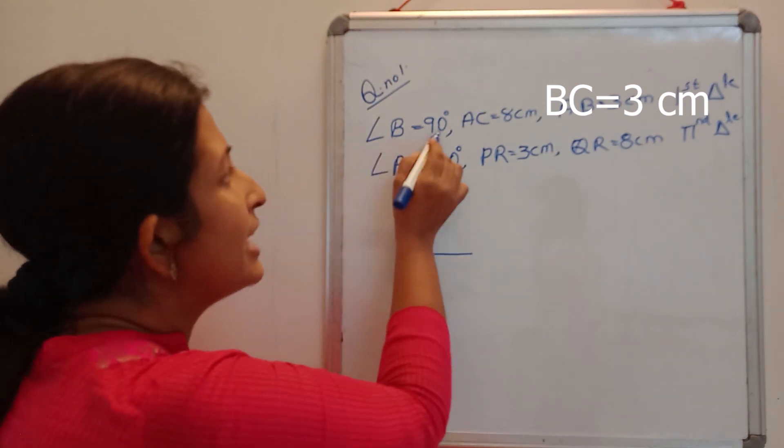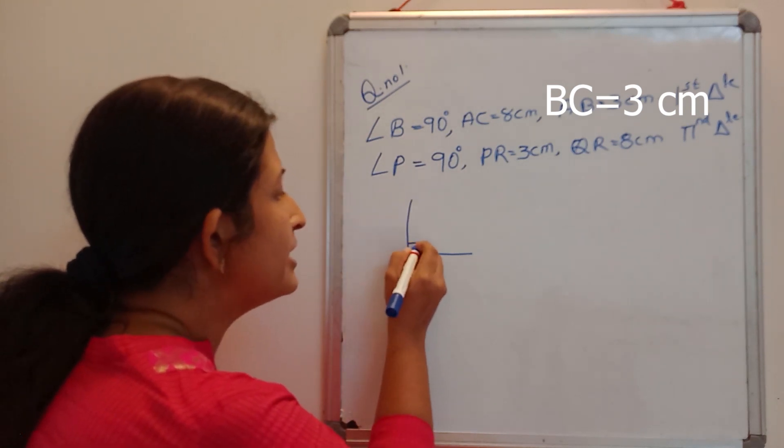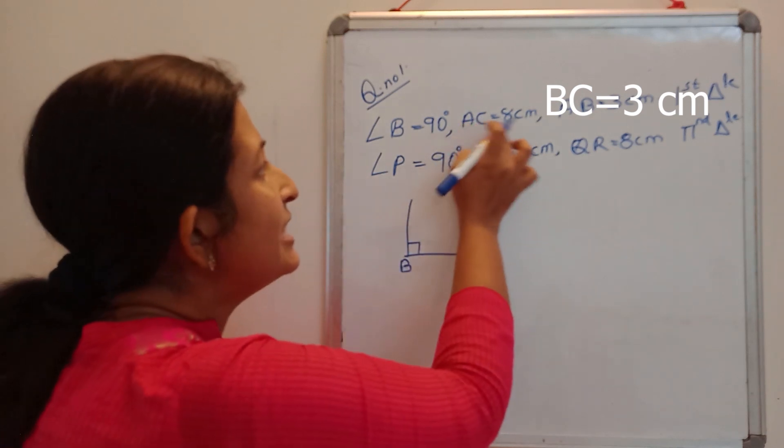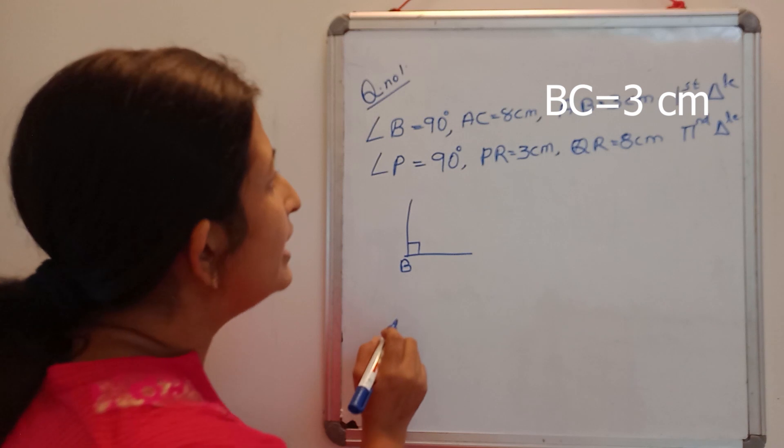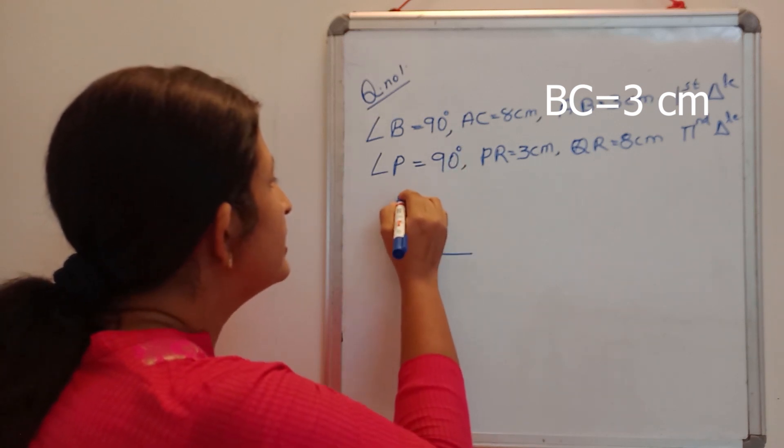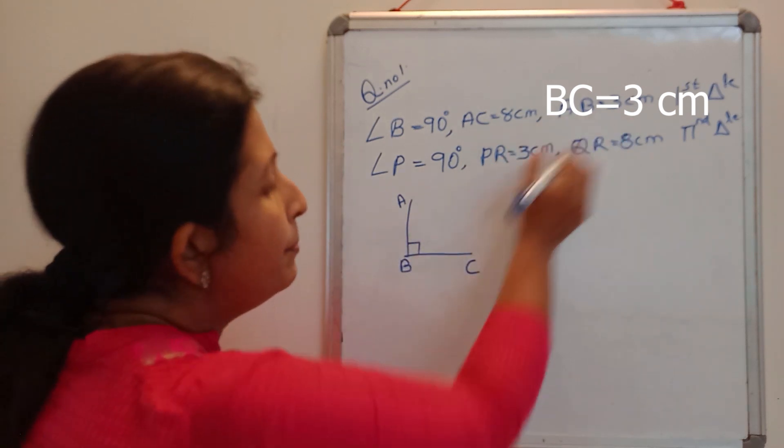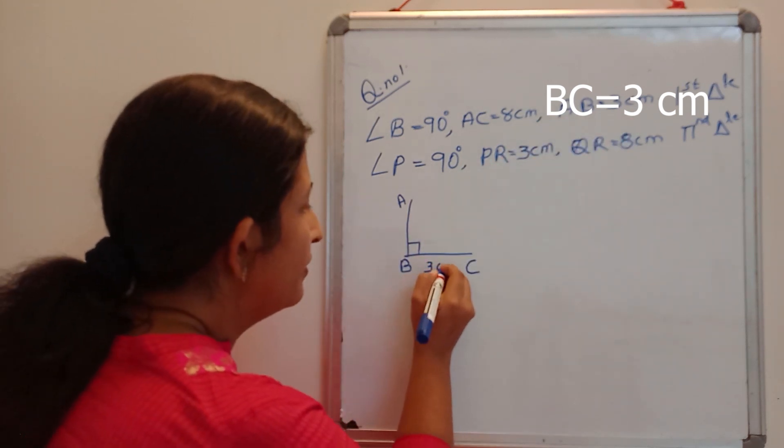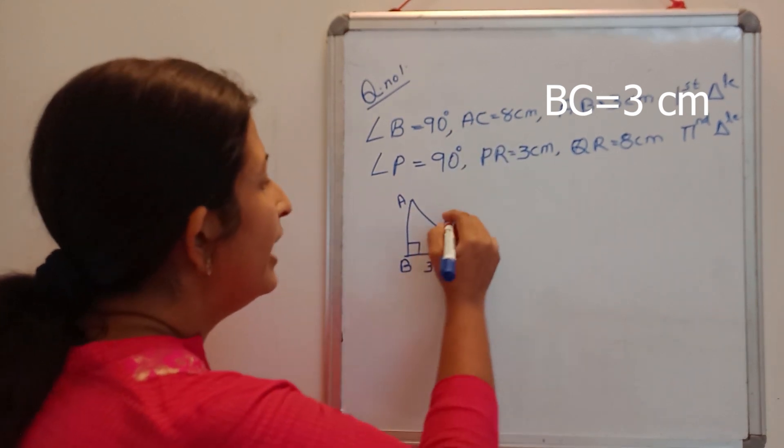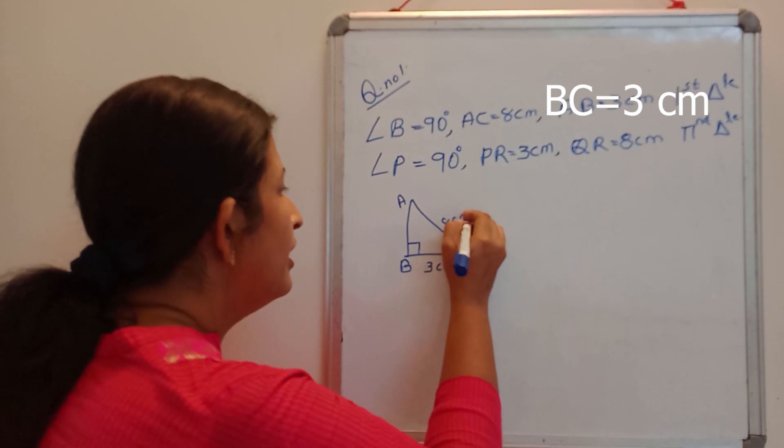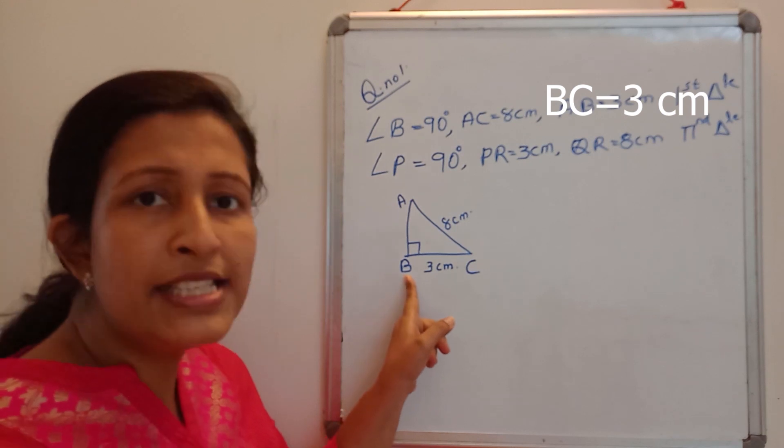So right angle is at B and this is 90. Then AC is 8 cm, AB is 3 cm. So this is A and this is C. AB is 3 cm and AC is 8 cm. From this figure we can say that AC is the hypotenuse and angle B is right angle and